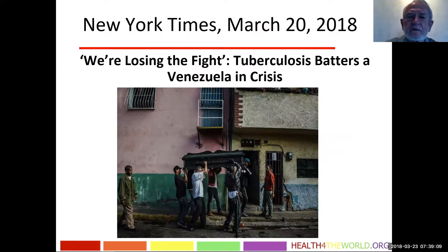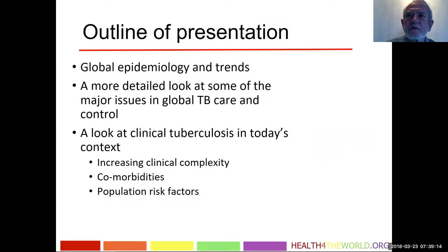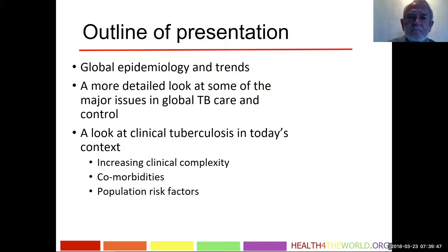The outline of the presentation covers three main areas: global epidemiology of tuberculosis and TB epidemiologic trends, a detailed look at major issues in global TB care and control, and then clinical tuberculosis in today's context — making the point that the disease is increasingly complicated by co-morbidities and other population risk factors that are increasingly being recognized and quantified.